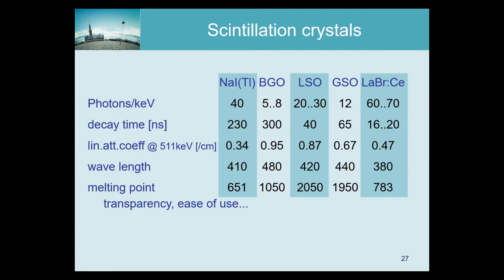Siemens made LSO scanners first because they had patented it. Other companies, hindered by that patent, continued searching for alternatives. GSO was a popular solution used by Philips for a while — slightly less light output but very fast, with slightly less stopping power. Once the patent expired, Philips and others switched to LSO or LYSO, now considered the best material. There are also materials like lanthanum bromide that are even faster than LSO, useful for pushing time-of-flight further, though they have poorer stopping power.